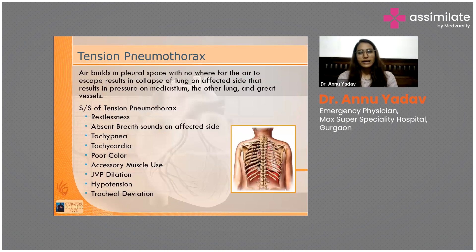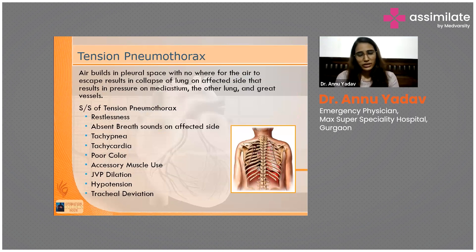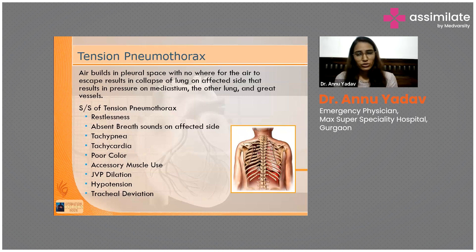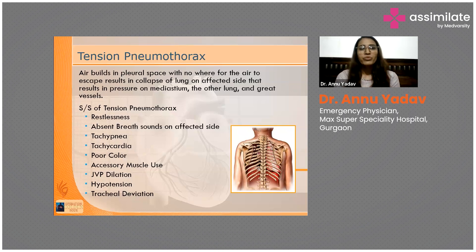Now we will deal with tension pneumothorax. In tension pneumothorax, there is a lot of air in the pleural space with nowhere for the air to escape. As I mentioned in open pneumothorax, air is going in and coming out. But in tension pneumothorax, air will just enter into the pleural cavity but does not have any place to go out, so the air will just build up in the pleural cavity.